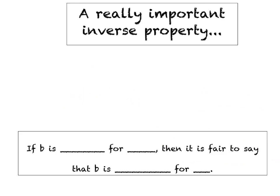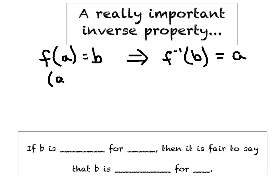Just before we jump into our first example, I want to also revisit another really important property from Algebra 2 that's going to play a role today, and that's the property that says, if f(A) = B, then we automatically know for sure that f⁻¹(B) must equal A.